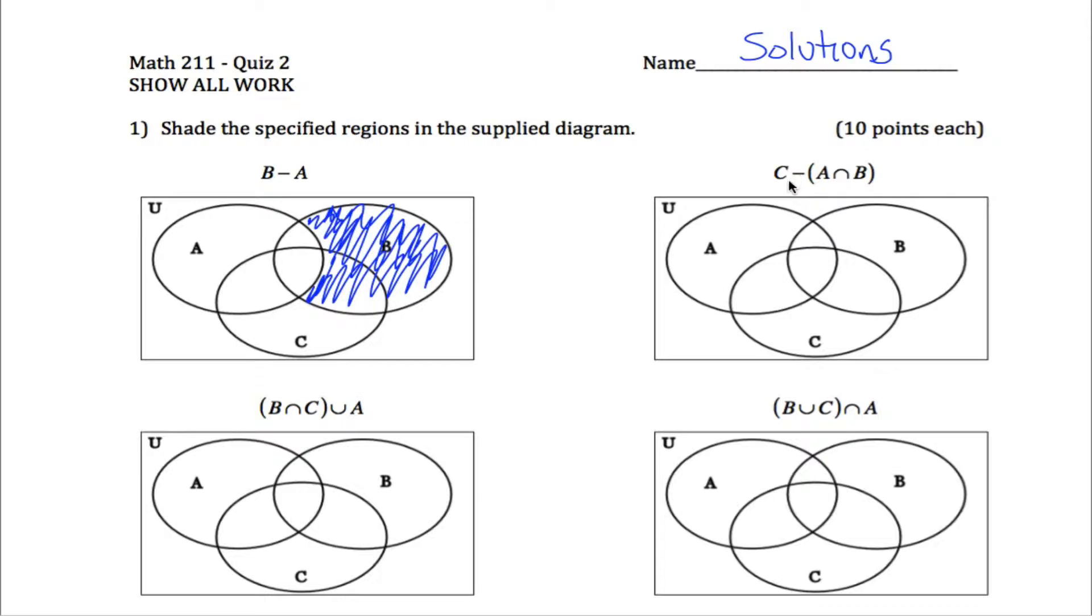What about over here? You're starting out with all of C, so starting with this thing right here. But then you've got to get rid of some of it. What are you going to get rid of? Anything that is in either A or in B.